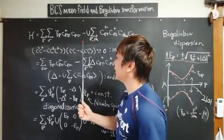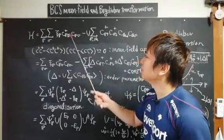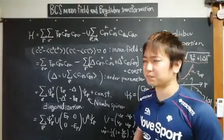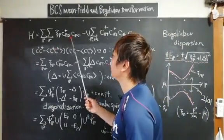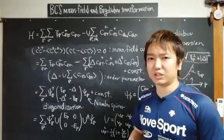P and K are the momentum, sigma is the electron spin, epsilon_p means dispersion of the electrons, and c-dagger and c are annihilation and creation operators of electrons.